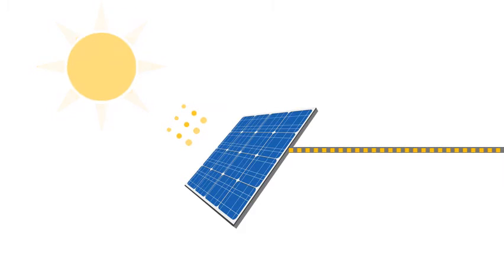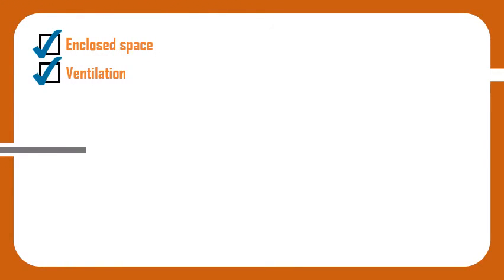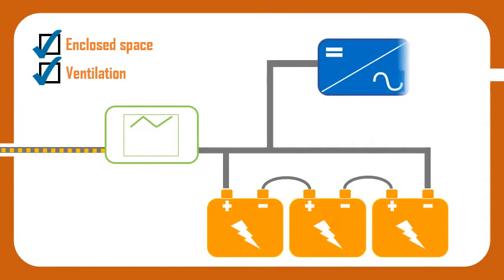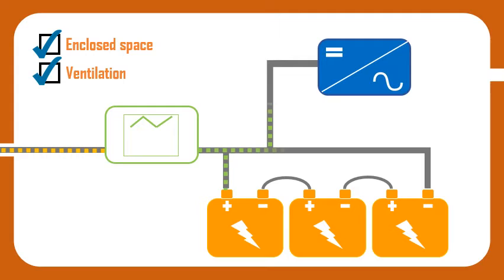The DC electricity from the panels is taken to an enclosed space with sufficient ventilation. In this space, the charge controller, inverter, and batteries are placed. As the name suggests, the charge controller primarily makes sure that